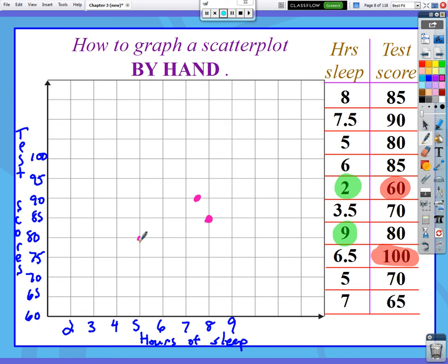5, 80 would be right here. 6, 85 would be right here. 2, 60. Ooh, this kid, not so much sleep, not so much grade. 3 and a half, 70 would be right here. 9, 80. So notice the kid that got the most sleep didn't ace the test. 6 and a half hour kid though, man, I think he found that sweet spot. 6 and a half hours. So every night before a big test, I feel like this one kid is showing you, you get 6 and a half hours of sleep, you're going to ace the test the next day. That's not true. Don't believe that. 5, 70 and 7, 65 right here.